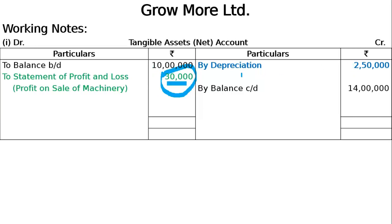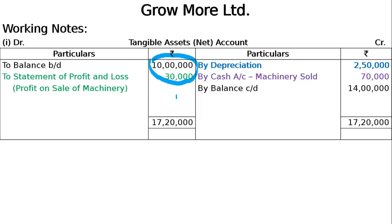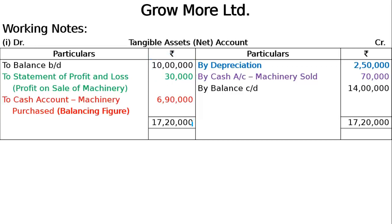On the credit side, we will record the sale. By cash account - sold old machine for 70,000. So here sale came, profit came on credit side. Credit side is bigger, so total it and bring it to debit side. Total the debit side: 10 lakh 30,000 minus - so debit side totaling gives us machinery purchased as the balancing figure, that is 6 lakh 90,000.